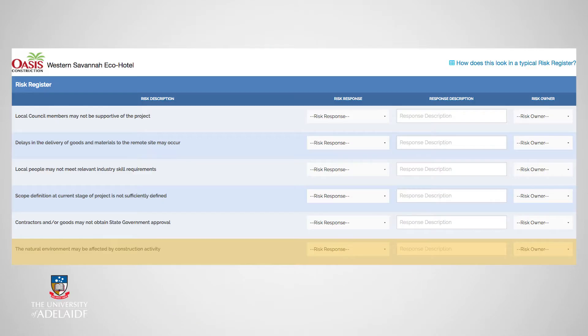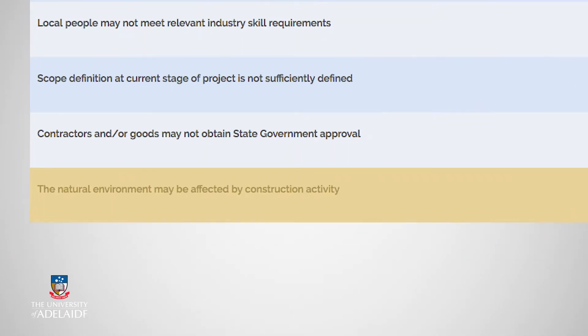It is also advised that each risk is given a unique identification number so that the risk can be assigned and tracked throughout the project. The next component that needs to be added to the risk register is the analysis and assessment that you will make in relation to each recorded risk. For example, Environment Risk Number 1. It is here where information on the likelihood, consequence, and impact of each risk on the project needs to be recorded.